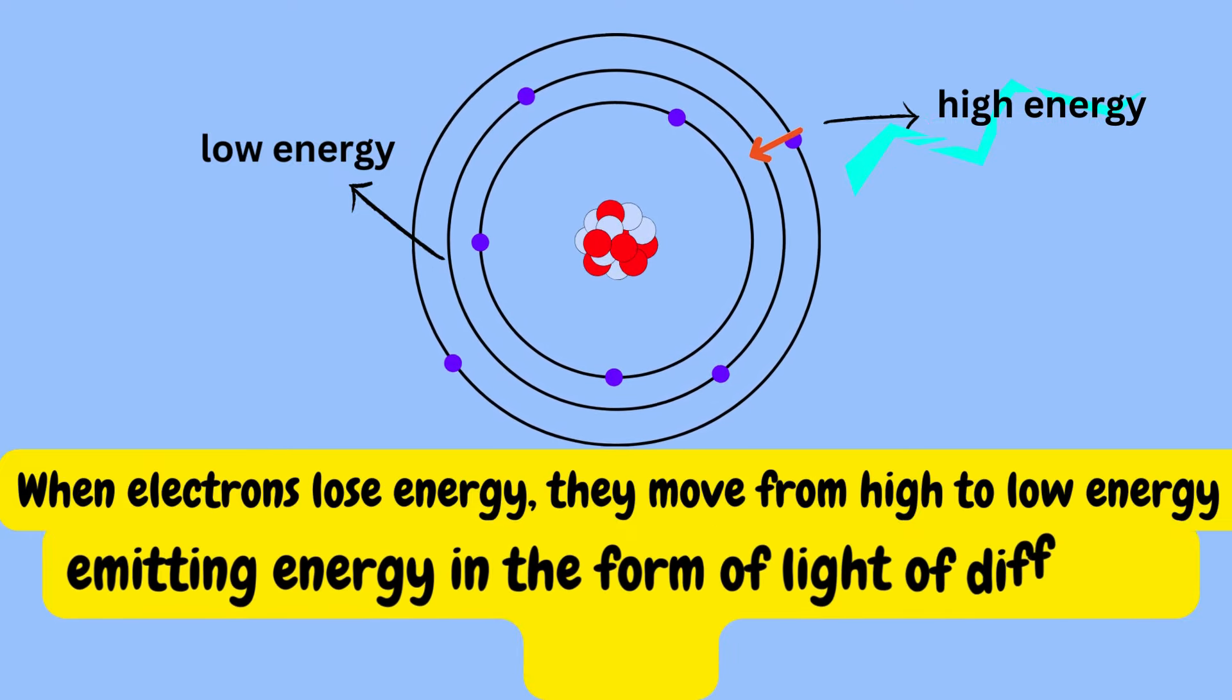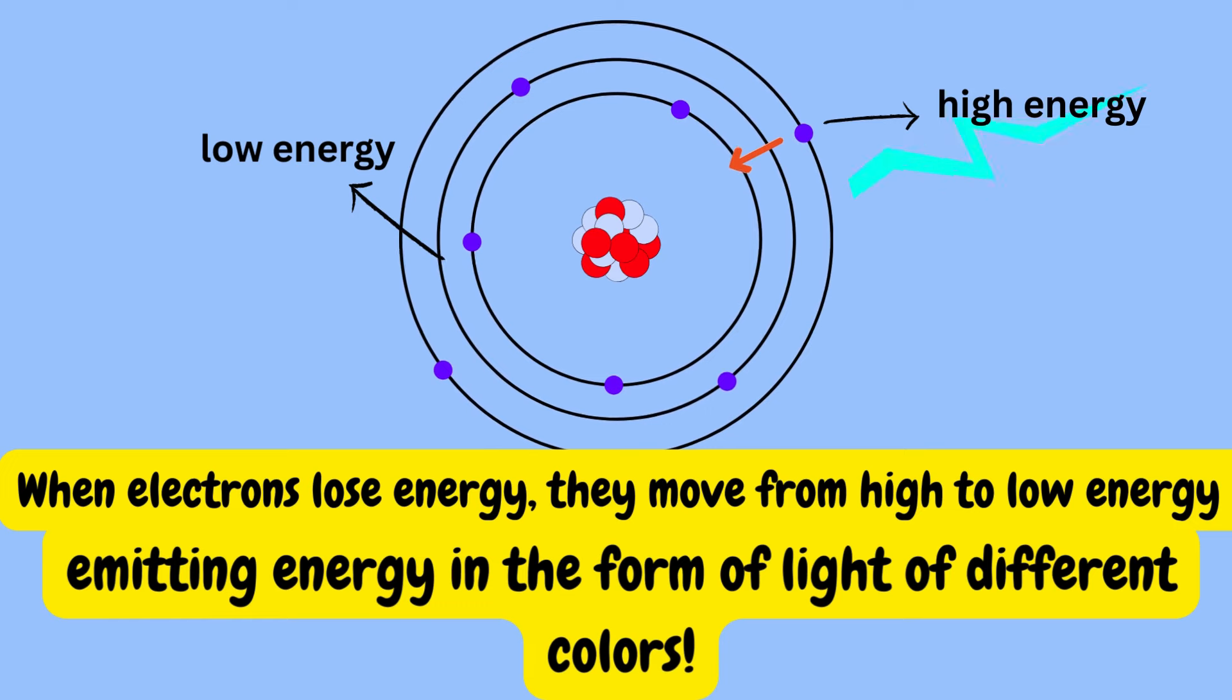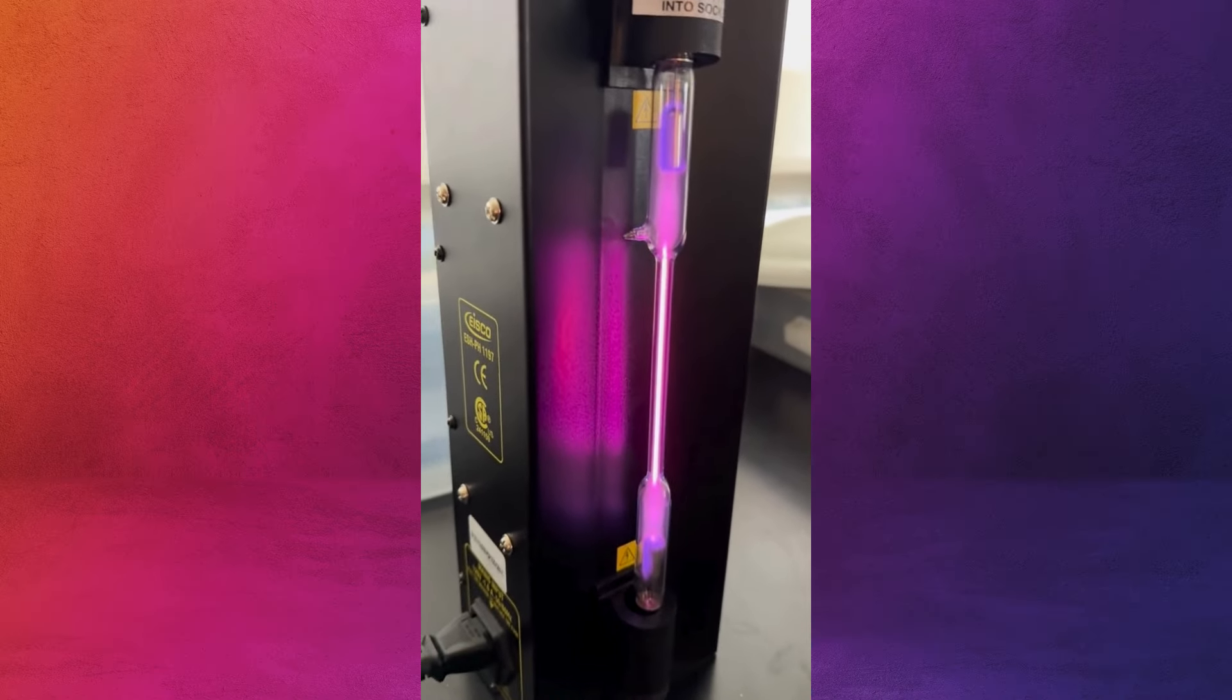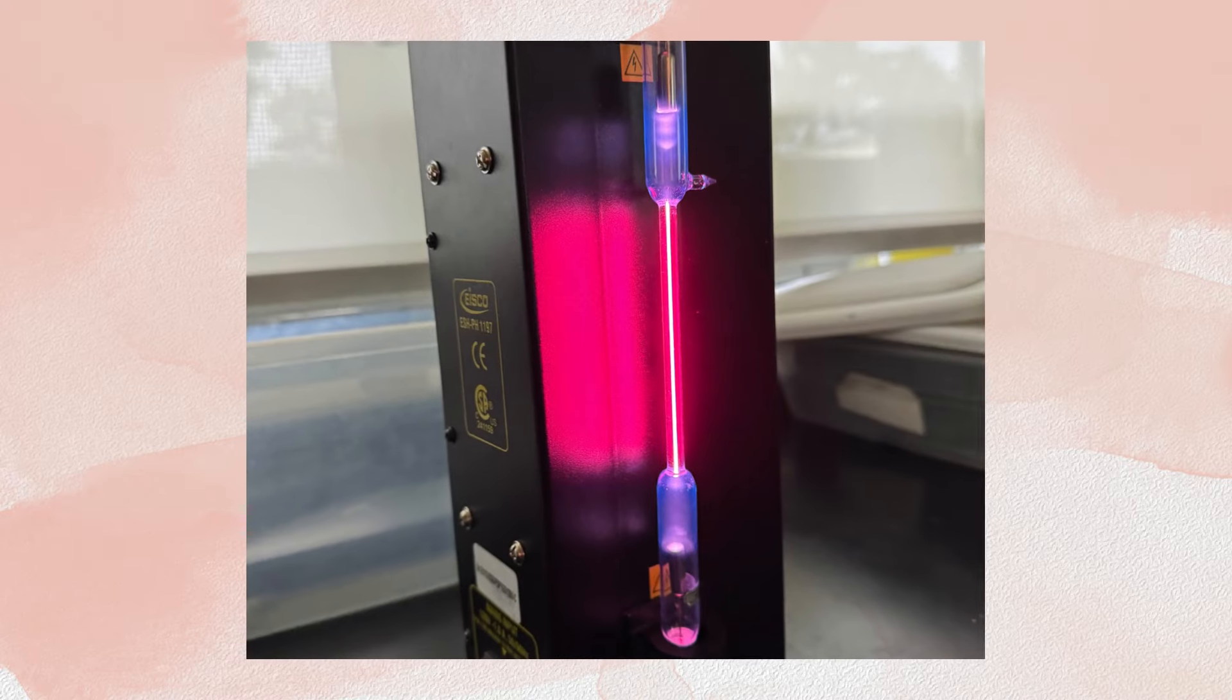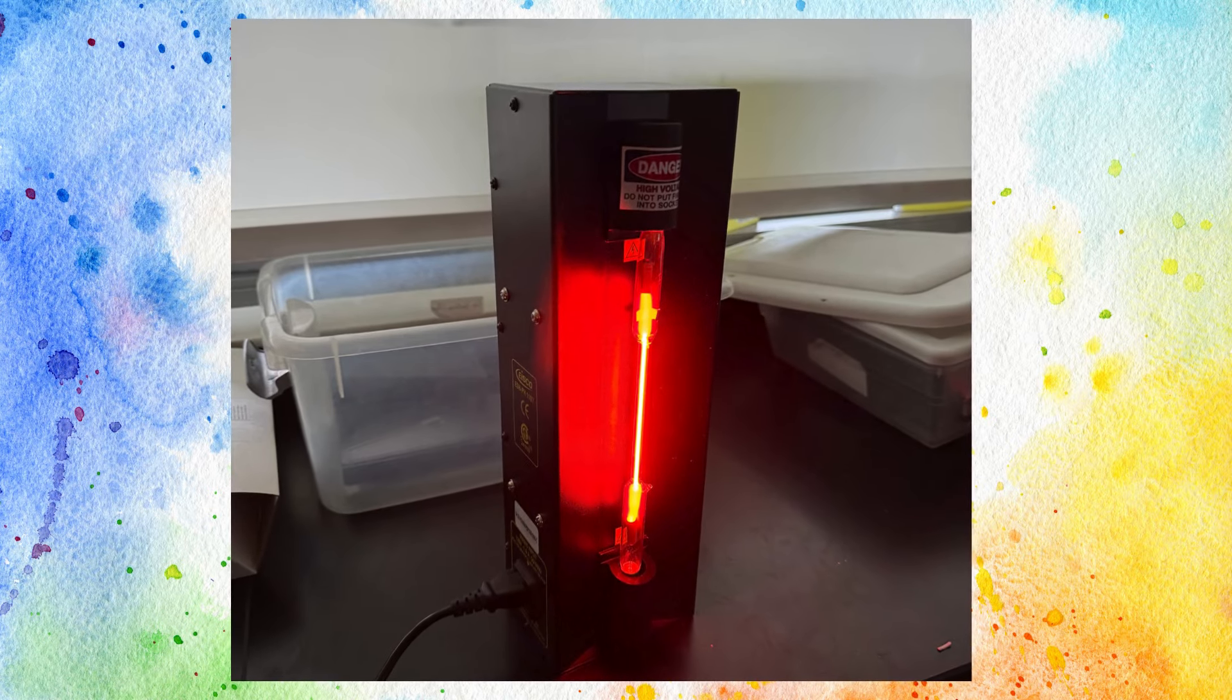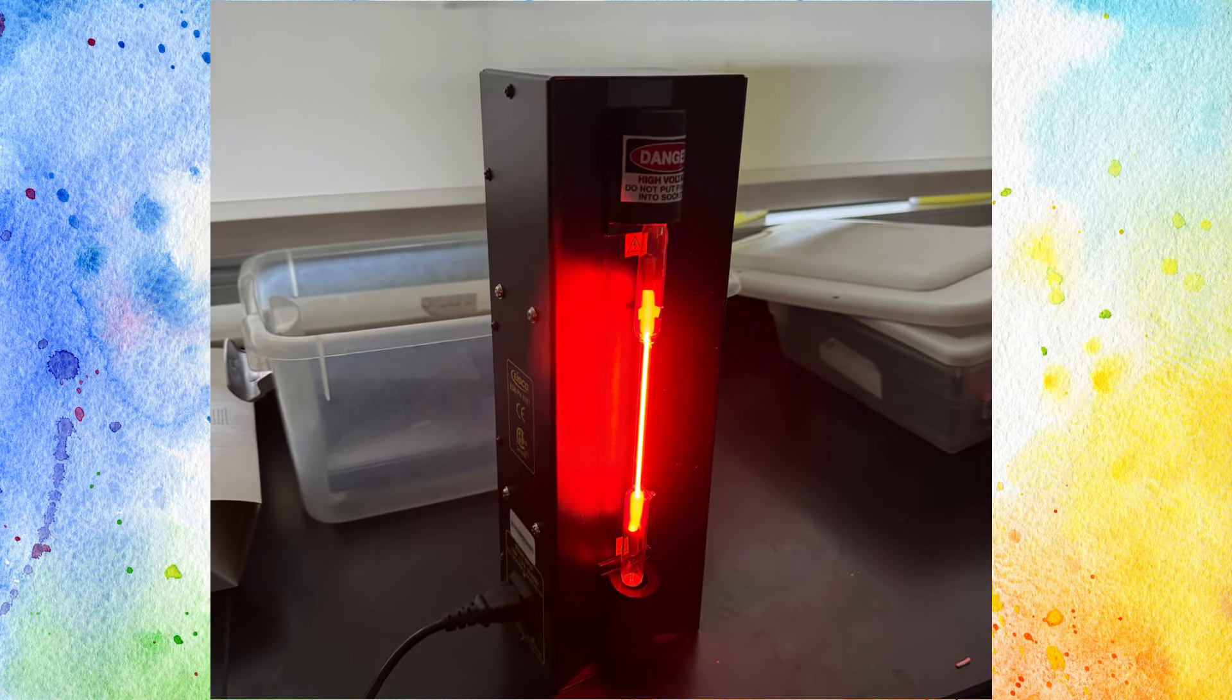In other words, when an electron transitions from a higher energy level to a lower one, it emits a photon of light with a specific energy. This energy corresponds to the difference in energy between the two levels, and the wavelength of the emitted light determines the color of the spectral line, which is visible using a spectroscope.